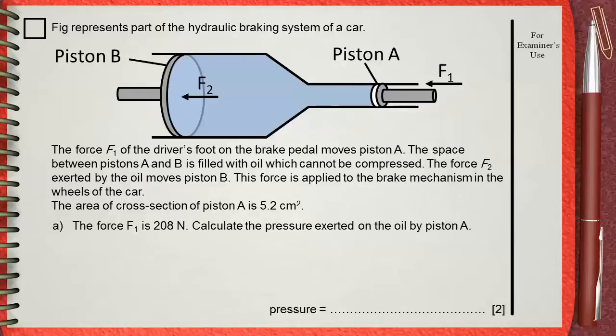The area of cross-section of piston A is 5.2 cm². The force F1 is 208 N. Calculate the pressure exerted on the oil by piston A.